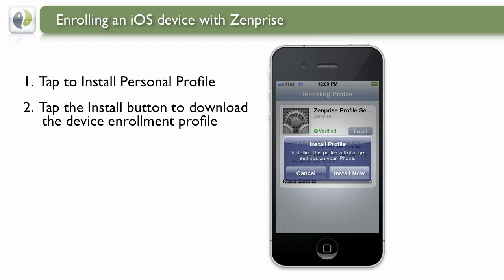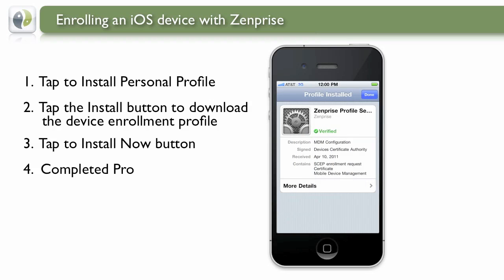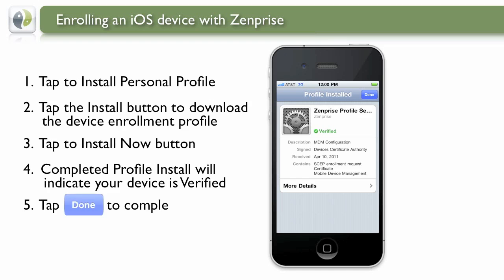And when prompted a second time for validating the enrollment, tap the Install Now button. The completed profile installation now indicates that your device is in fact verified and ready for use. You can now tap the Done button to complete Step 2.